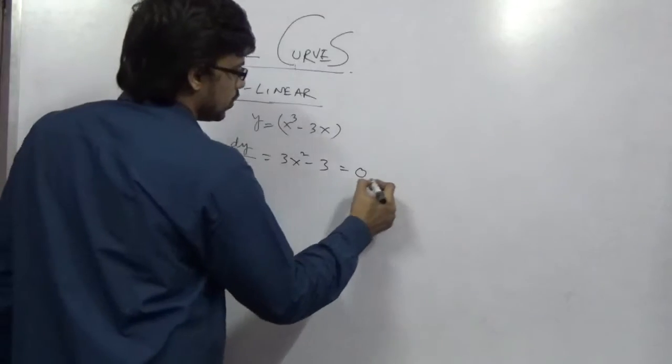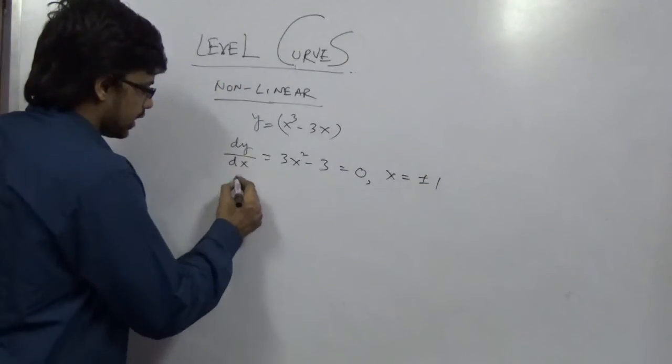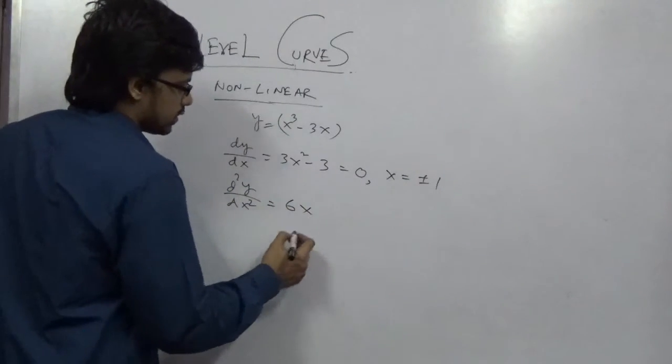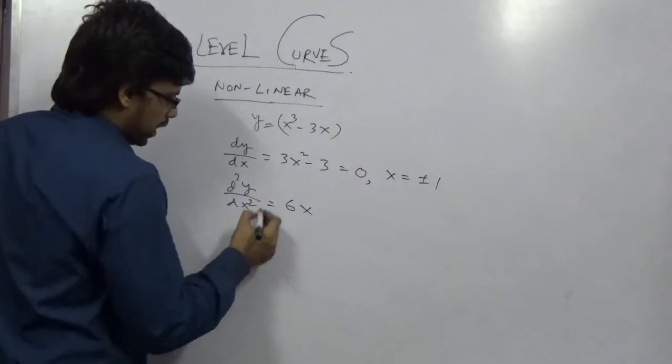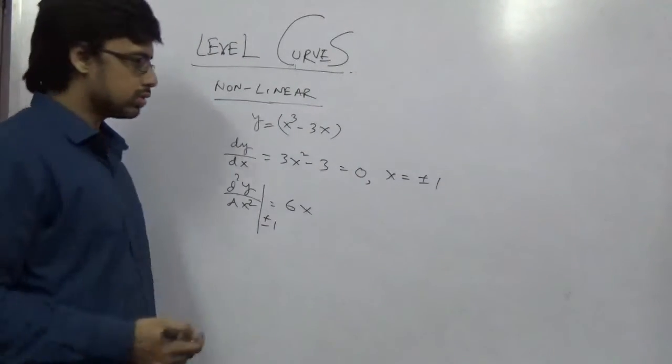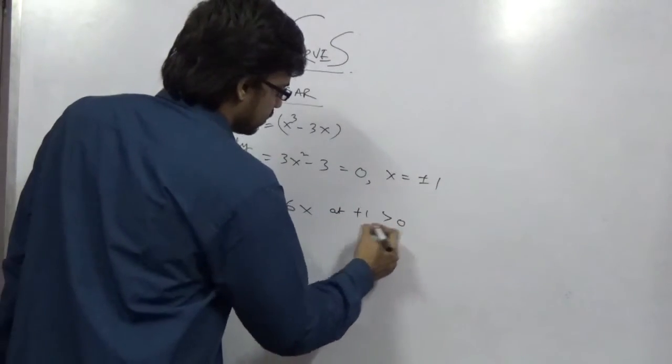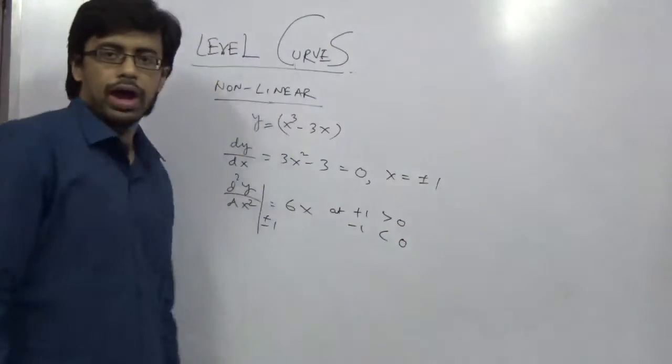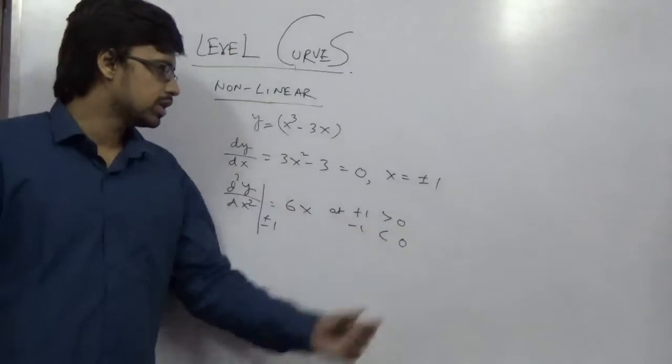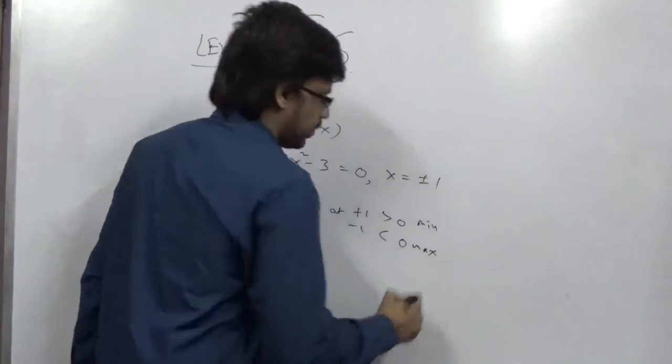Equate with 0 which will give you x value as plus minus 1. Next you need to differentiate this part. So that will give you 6x. Putting plus 1 and minus 1 over here you will get 2 values. That is at plus 1 greater than 0 and minus 1 less than 0. So that will give you the maximum according to maximum minimum rule. We can say that this will give you the minimum point and this will give you the maximum point.